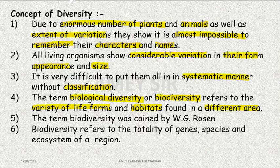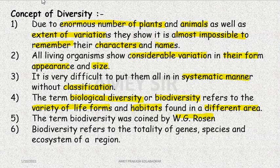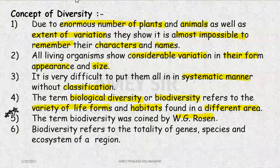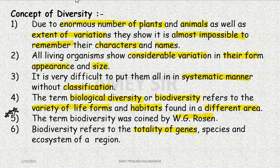W.G. Rosen has coined this term. The three things that refer to biodiversity are: A) the totality of the genes, then species, and ecosystem of a region.